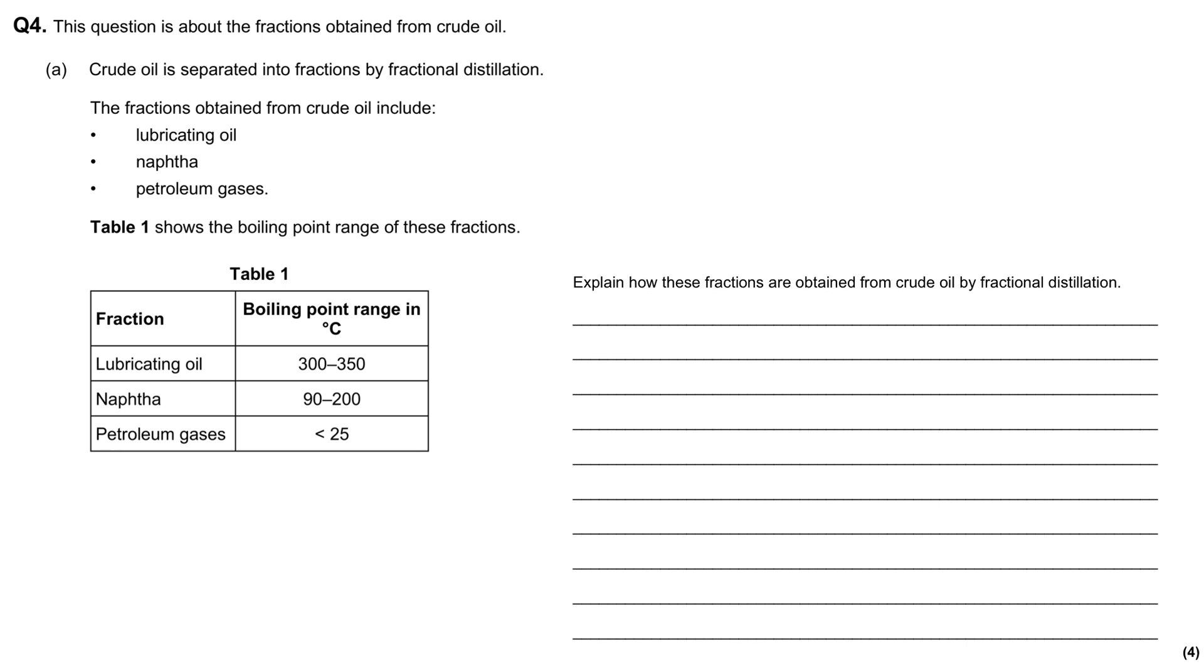This question is about the fractions obtained from crude oil. Crude oil is separated into fractions by fractional distillation. The fractions obtained from crude oil include lubricating oil, naphtha, and petroleum gases.